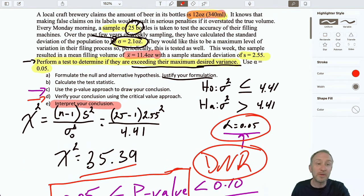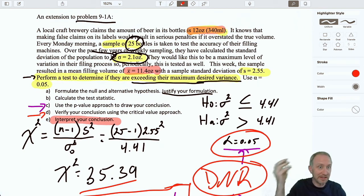What does this all mean? Well, it means that we have insufficient evidence to reject the null hypothesis, which means we have no reason to worry about the level of variation in our bottle filling procedure. We are not exceeding our maximum level of variation.